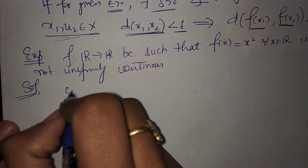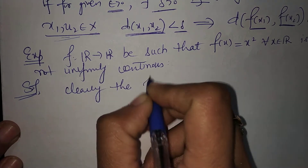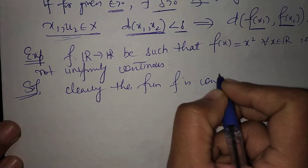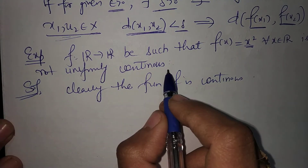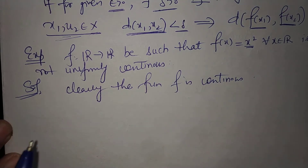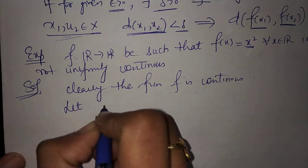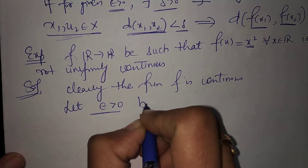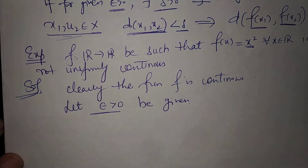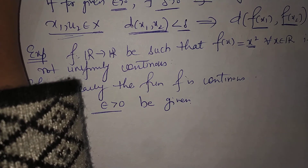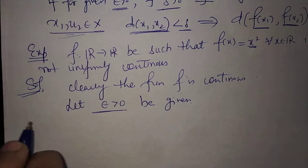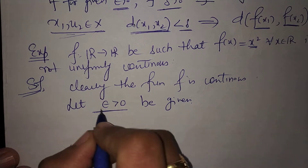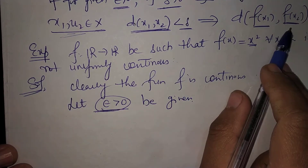Clearly the function f is continuous because every polynomial is continuous, and x² is a polynomial. Now we have to show that this function is not uniformly continuous. Let epsilon greater than zero be given. We will show that for this epsilon there is no delta — that is, for this epsilon, no delta will satisfy the definition. So let delta be any positive number.